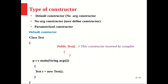Here we can see that we have a class named Test with a public static void main method. Inside the main method we have created an object of class Test referenced by T. As the object is created, the compiler looks to see if the user has defined any constructor. Since the user has not defined any constructor, the compiler inserts a no-argument constructor — public Test() — which is the default constructor.